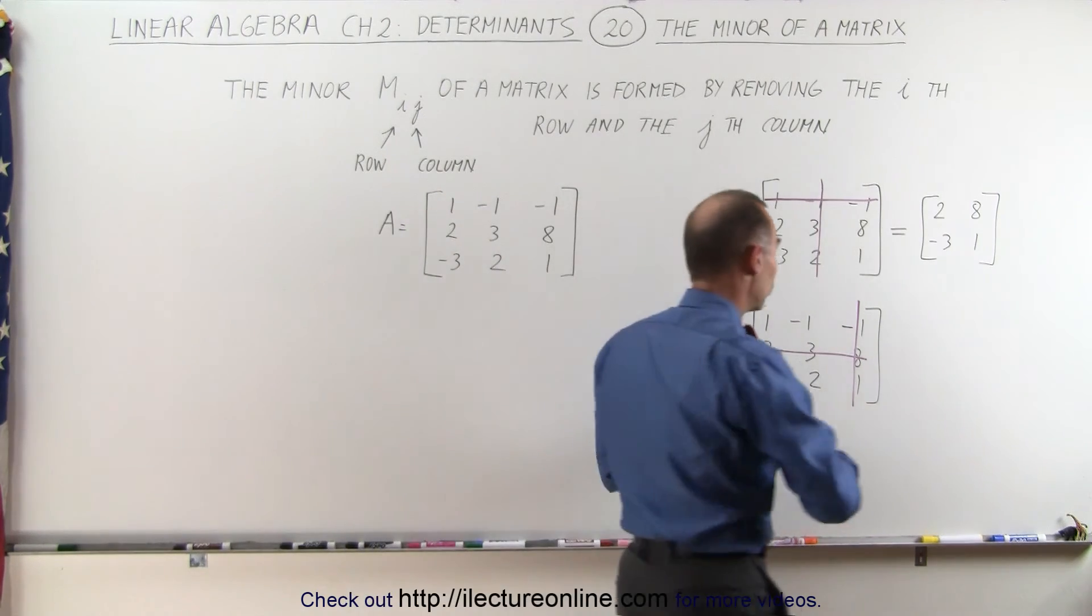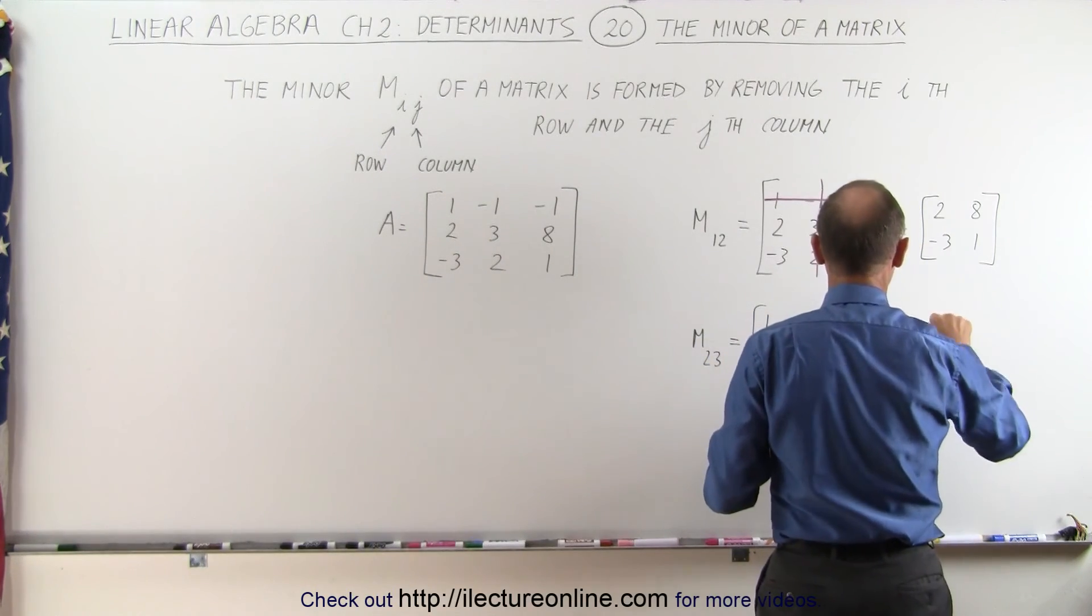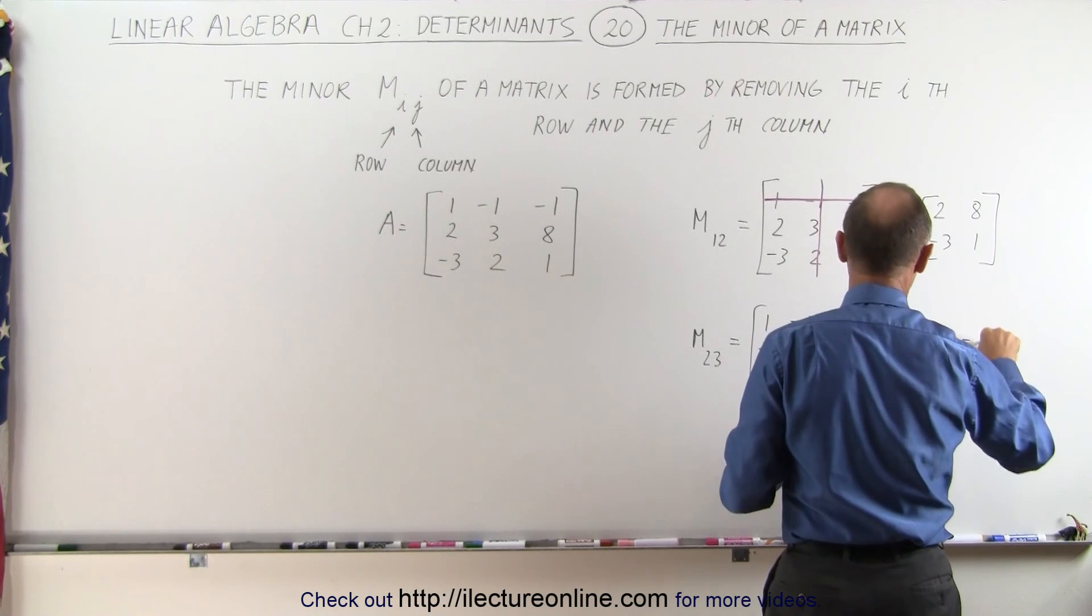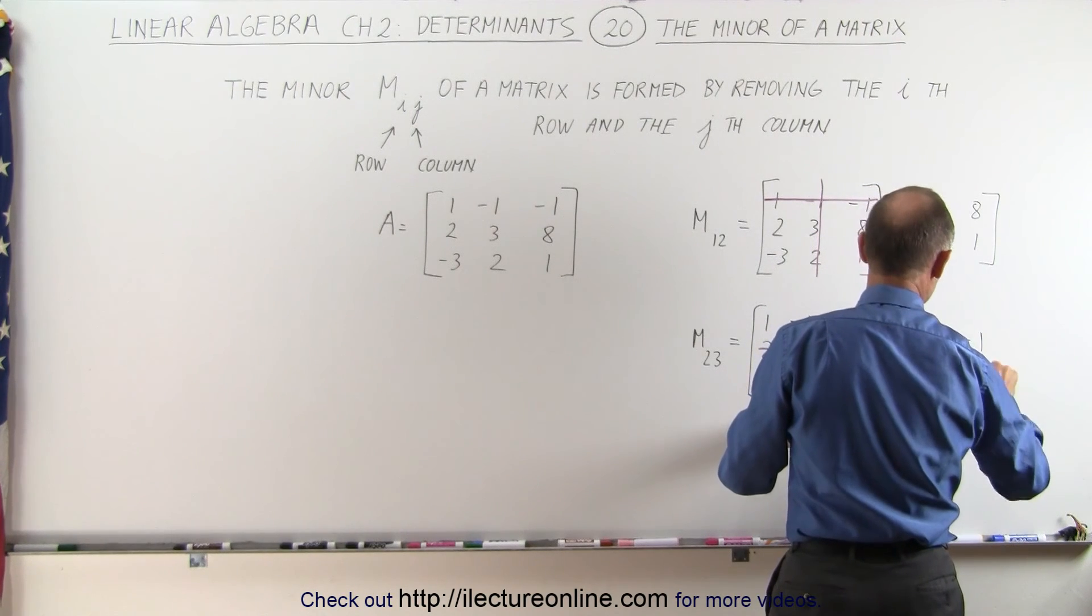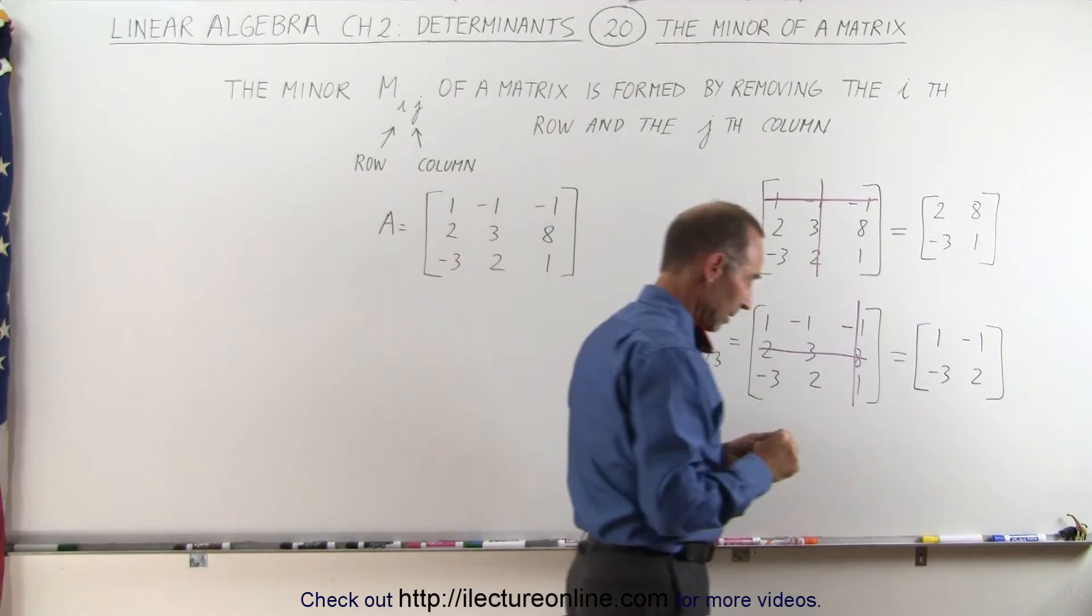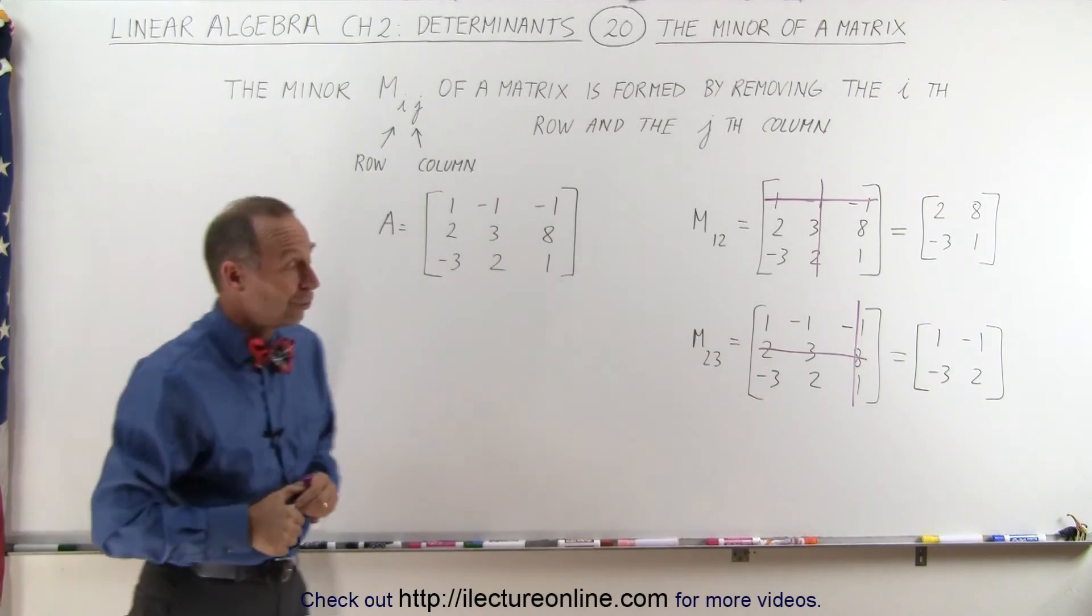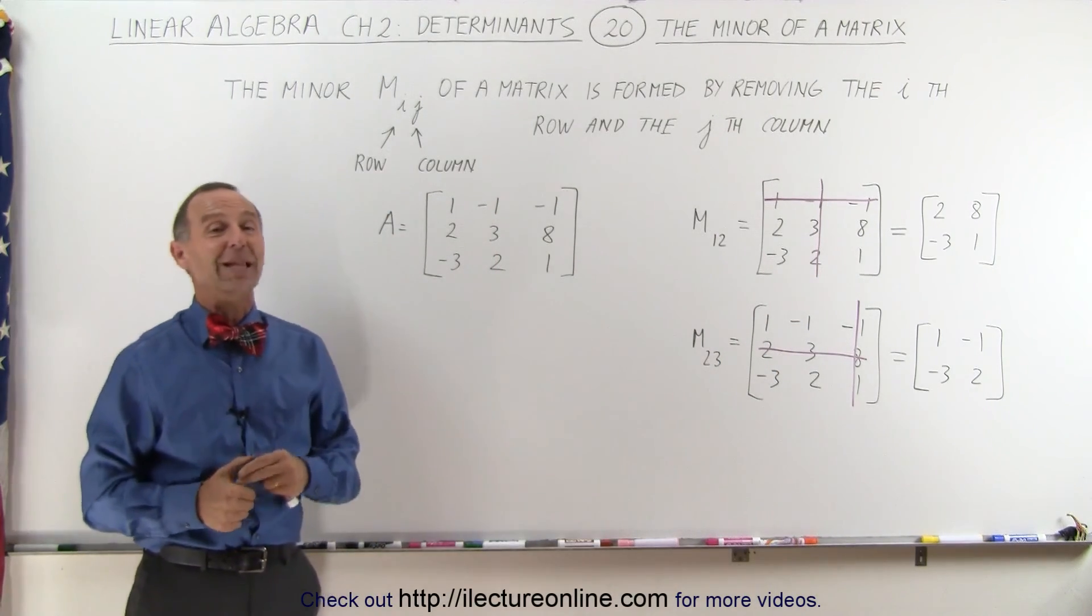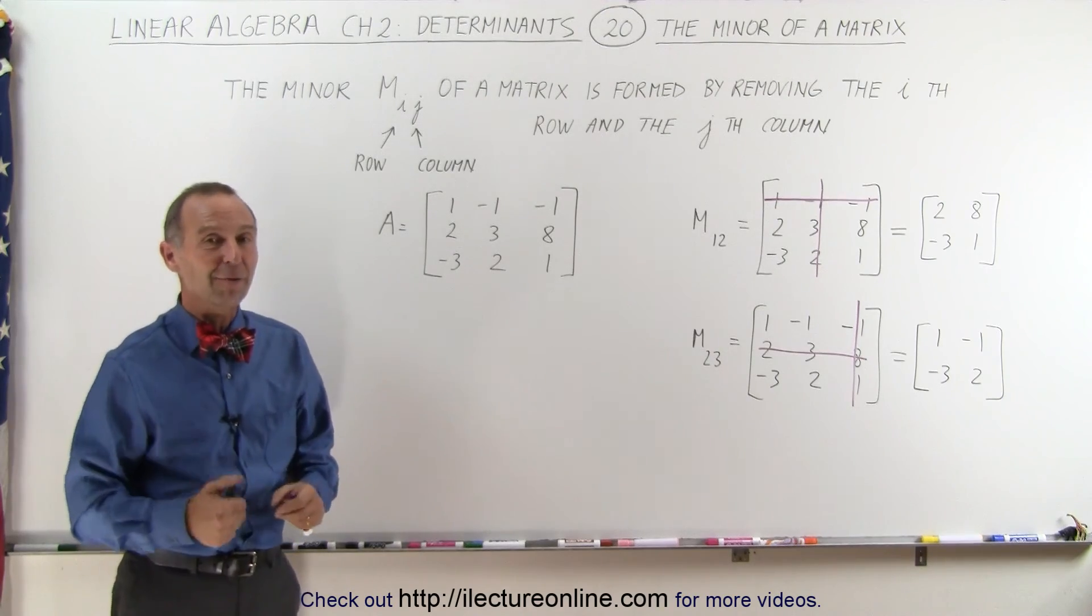That's a two by two matrix. Now this is equal to 1, -1, -3, and 2. And so it's actually once you know how to do it it's not very difficult, and that's how we find the minor of a matrix.